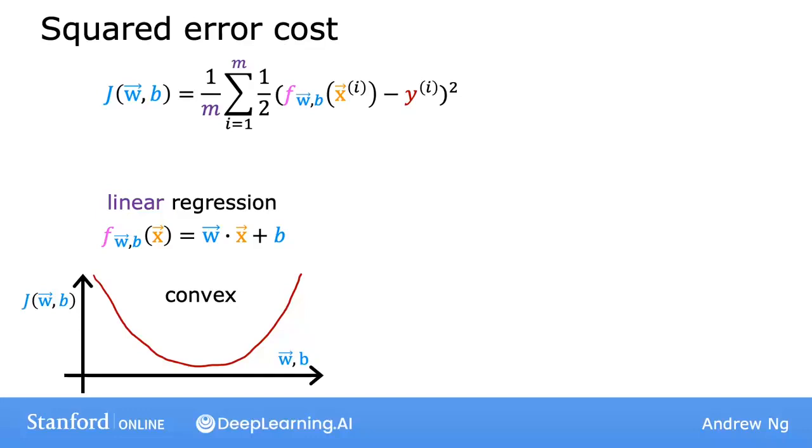And so gradient descent will look like this, where you take one step, one step, one step, and so on, to converge at the global minimum.